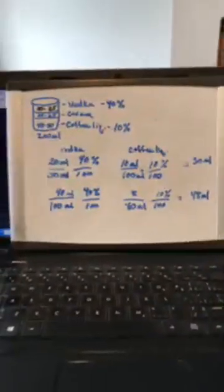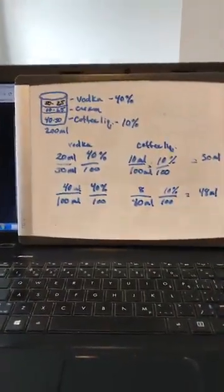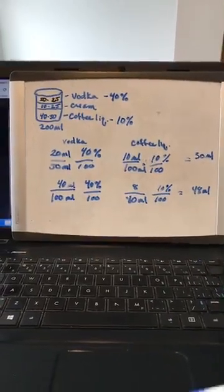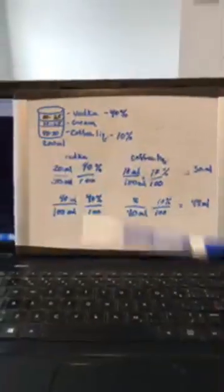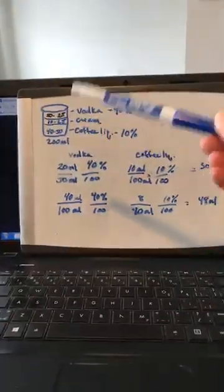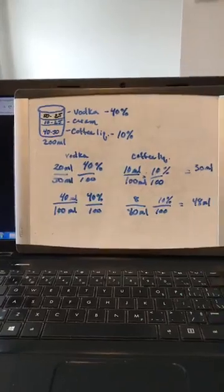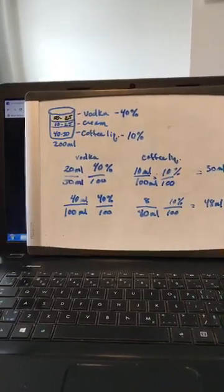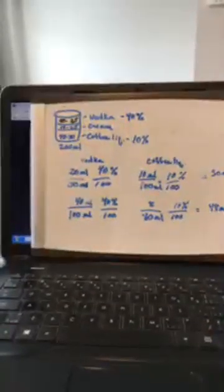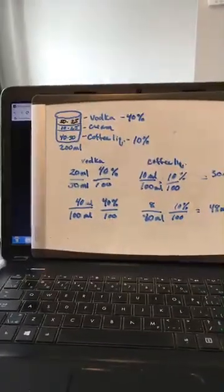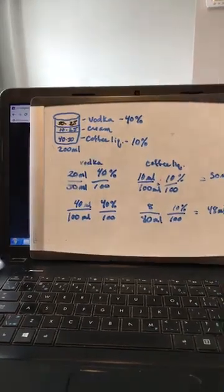With complex questions, I really like to draw them out because it's a visual way for me to process the information. Right up at the top here is where I started — I wanted to determine how many parts the drink had. So there was the vodka, the cream, and the coffee liqueur. In total, your drink had three parts.